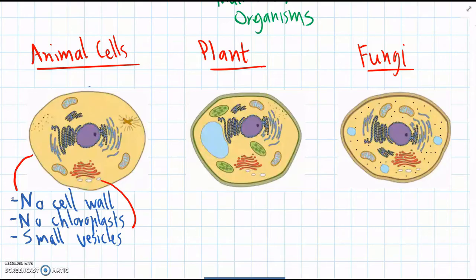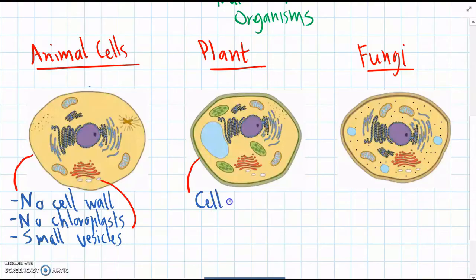Moving on to plant cells, the most obvious difference we can see is around the outside. All plant cells do have a cell wall, and this gives them shape and structure. That's how plants can hold themselves up without needing to have a skeleton like animals do.